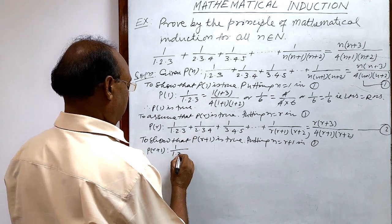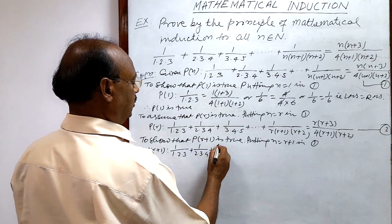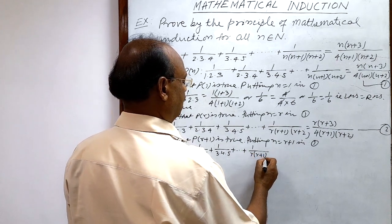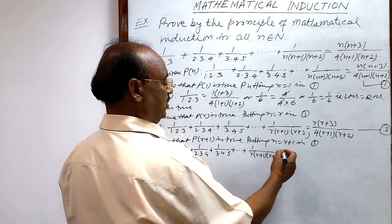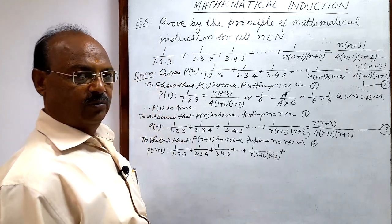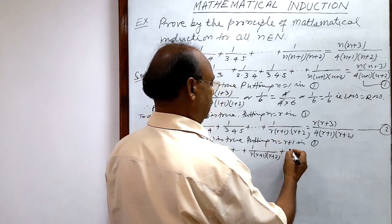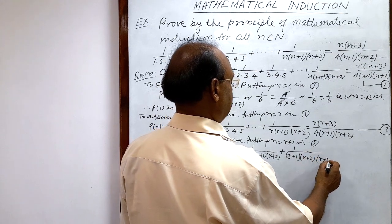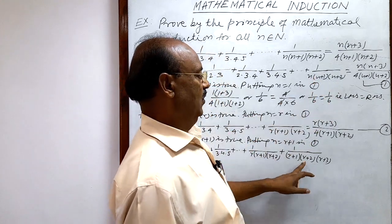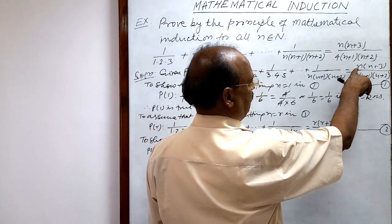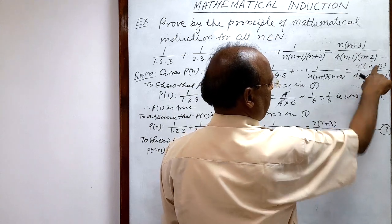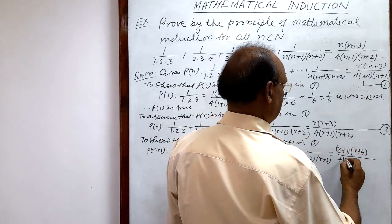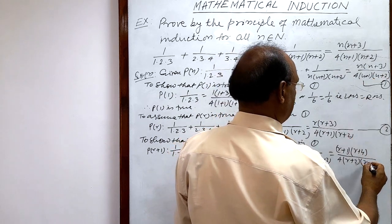The LHS of P(r+1) is: 1/(1·2·3) + 1/(2·3·4) + 1/(3·4·5) + ... + 1/(r·(r+1)·(r+2)) + 1/((r+1)·(r+2)·(r+3)). The RHS, putting n = r+1, is (r+1)·(r+4) / [4·(r+2)·(r+3)]. We have to prove this.